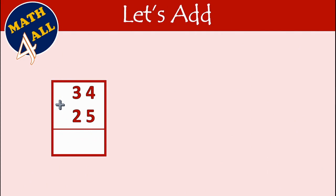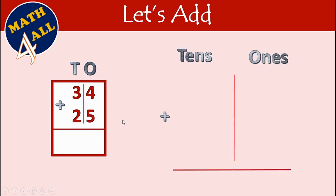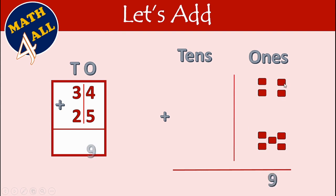Now let's solve another example. The first step: cut between places — cut between tens and ones — then start from the ones place. Add four plus five: count after the biggest number, after five: six, seven, eight, nine. So four plus five equals nine.